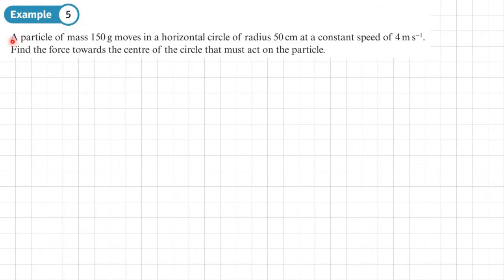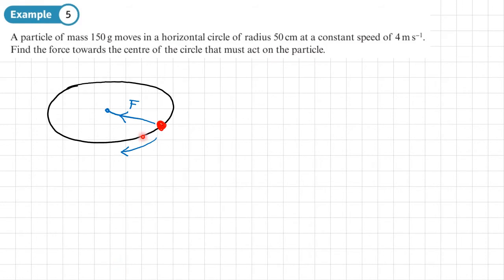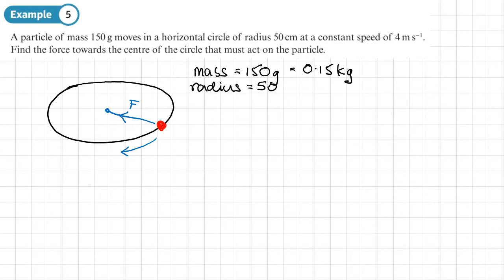Example 5: a particle of mass 150 grams moves in a horizontal circle of radius 50 centimeters at a constant speed of 4 meters per second. Find the force towards the center of the circle that must act on the particle. First, convert units to SI: 150 grams is 0.15 kilograms, and the radius of 50 centimeters becomes 0.5 meters.